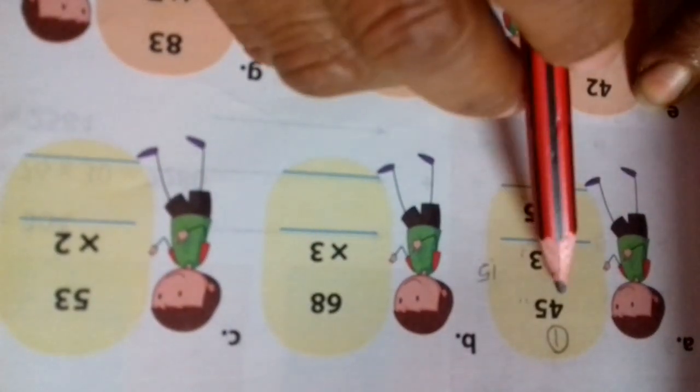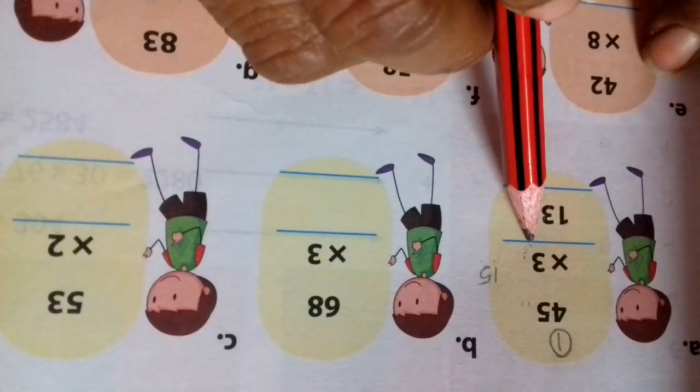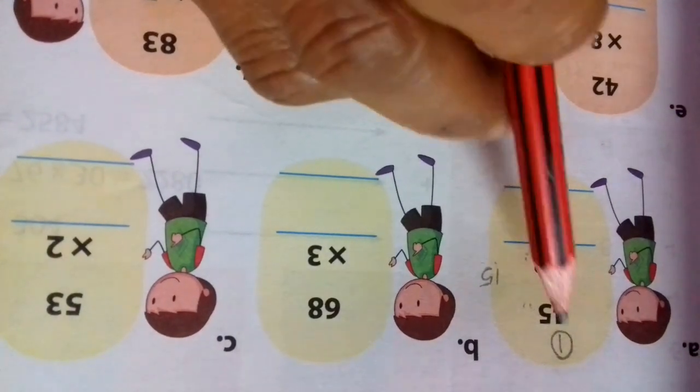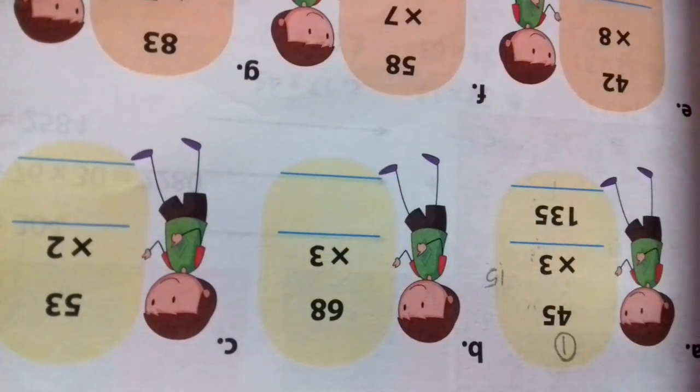Then 3 table again, we will add 4 times. 3 ones are 3, 3 twos are 6, 3 threes are 9, 3 fours are 12. And 1 which we carry, we will add plus. So 12 plus 1 is 13. Come on answer.